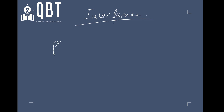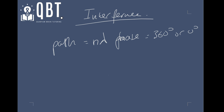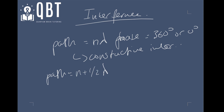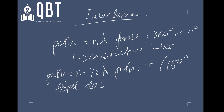What you really need to take away is: when your path difference is equal to n-lambda and your phase difference is equal to 360 degrees or 0 degrees, you end up with constructive interference. And when your path difference is equal to (n + ½)-lambda, or your phase difference is equal to pi or 180 degrees, then you end up with total destructive interference.